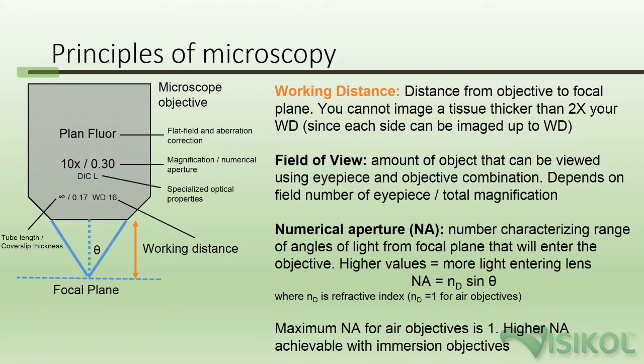In determining the capability of a confocal system, the most important feature to look at is the microscope's objectives, as these will dictate the size of the tissue you can image as well as the resolution you can achieve. Working distance is the most important objective parameter when considering 3D tissue imaging. It is the distance from the bottom of the objective to its representative focal plane. Oil immersion objectives will typically have a working distance of less than 250 microns, while the working distances of air, water, and glycerol objectives can vary dramatically.